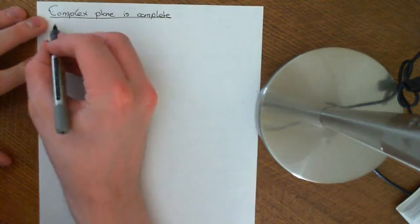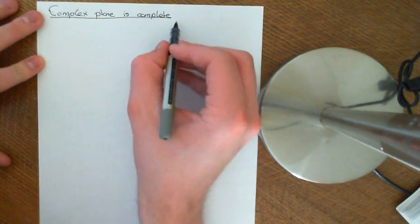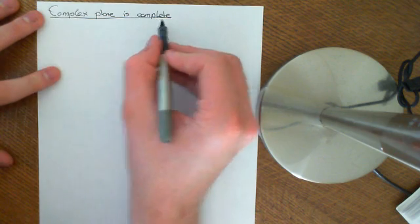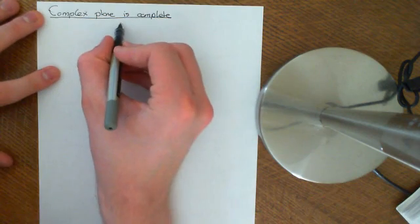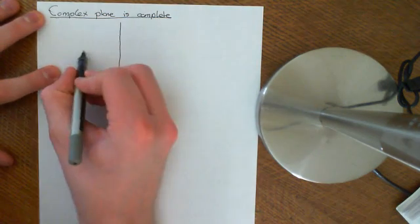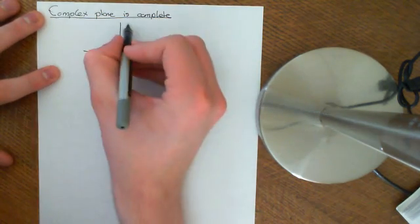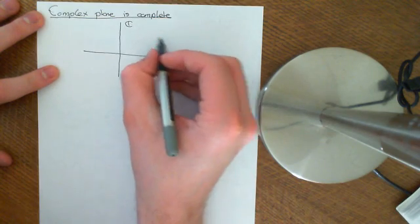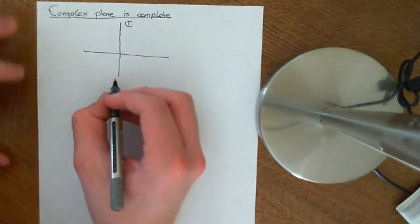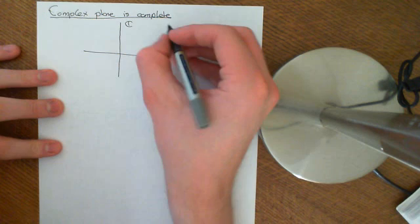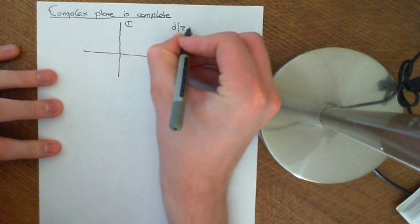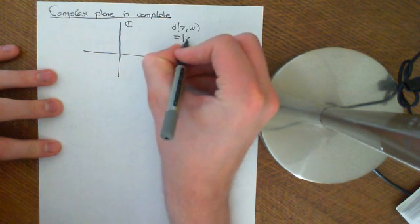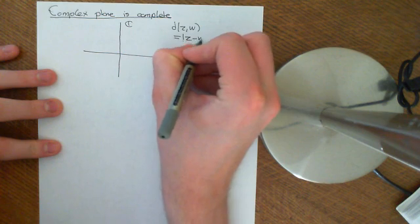So if we want to prove that the complex plane is complete, then what we need to prove is that any Cauchy sequence in the complex plane converges to a limit within the complex plane. Here is the complex plane with the usual metric on it — the complex numbers with the usual metric, where the distance between any two complex numbers z and w is just the complex modulus of z minus w.